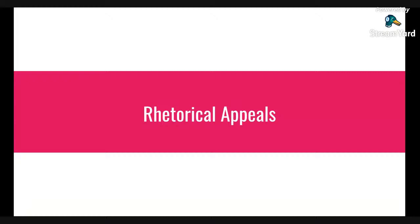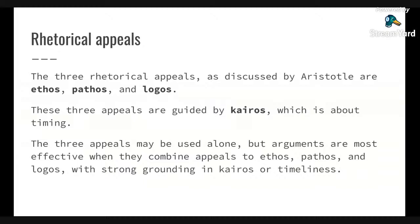Now let's look at rhetorical appeals. The three rhetorical appeals, as discussed by Aristotle, are ethos, pathos, and logos. These three appeals are guided by kairos, which is about timing. The three appeals may be used alone, but arguments are most effective when they combine all three and are strongly grounded in kairos.